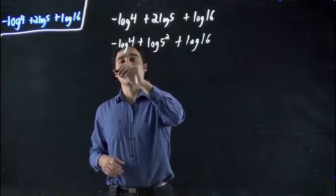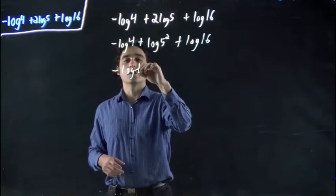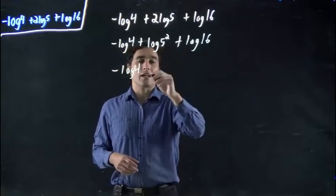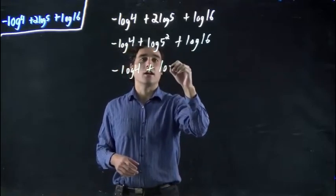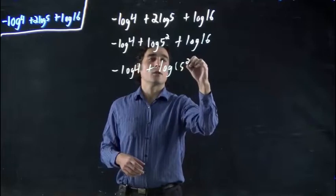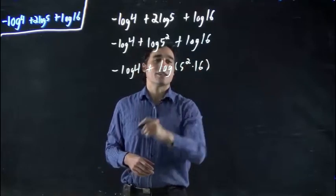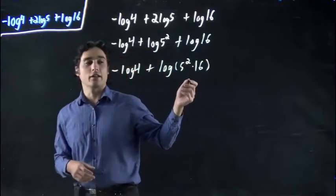So now, apply the product rule. We can rewrite this as minus log 4, going very methodically through it. And I can combine these. Plus log 5 squared times 16. That is our product rule being applied right there.